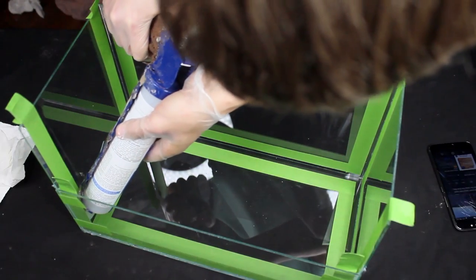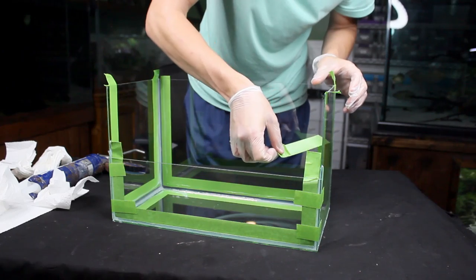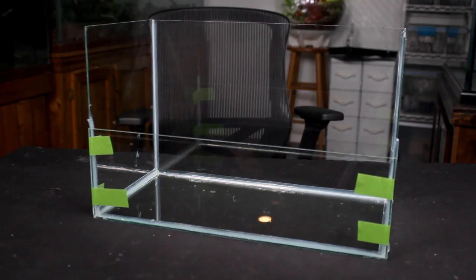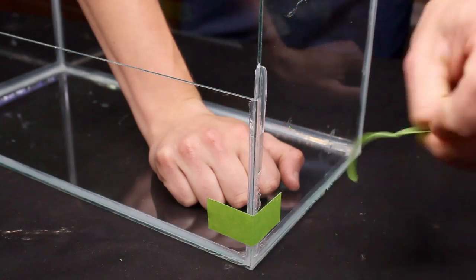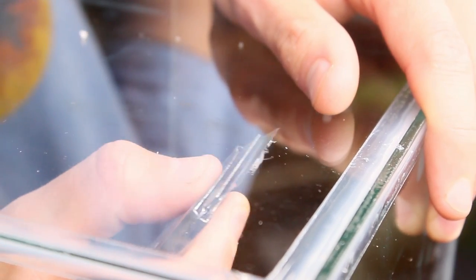A bead of silicone was then applied to the interior of the tank. I smoothed it out with my finger and removed the tape. Everything sat to cure for 24 hours before removing the tape from the front. I also went around with a scraper to remove any excess silicone.